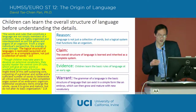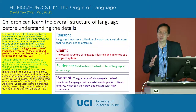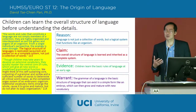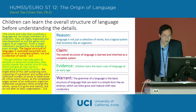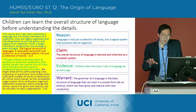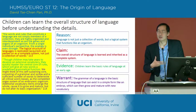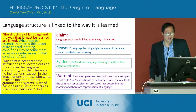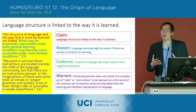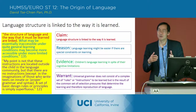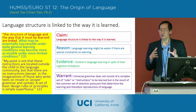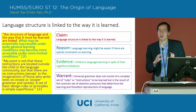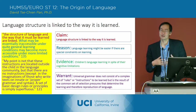Even when children hear more complex sentences, they filter out the complexity and just see the basic structure. Deacon sees the grammar of a language as the basic structure that can exist in this simple form, and that's the form in which it has to be learned by children. He indicates then that this language structure is linked to the way in which it's learned — because children need to learn something simple, language has to be structured in a way that's easily reducible to a kind of simple system.